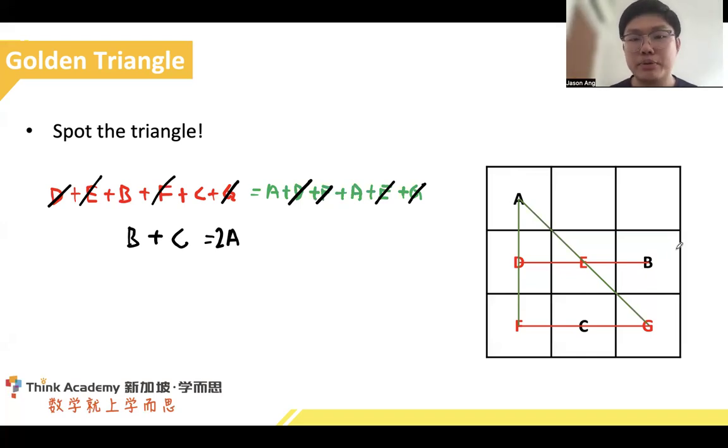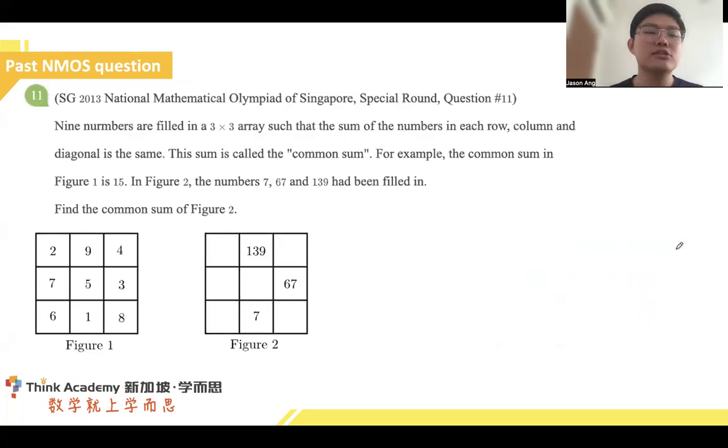Let's look at one of these past NMOS questions. Although it's a 2013 paper, these rules can be very helpful, especially the golden triangle. Now let's look at these numbers. Nine numbers are filled in a three by three array such that the sum of numbers in each row, column, and diagonal is the same.